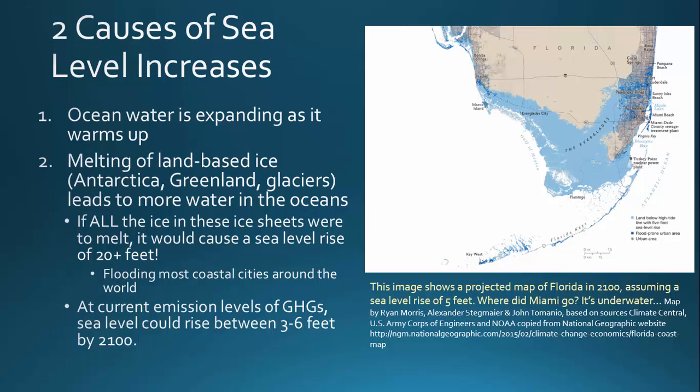If all of the ice in these ice sheets combined were to melt, it would cause a sea level rise of more than 20 feet. That doesn't sound like a lot, but it would flood most coastal cities around the world, because most coastal cities really aren't higher than 20 feet above sea level.